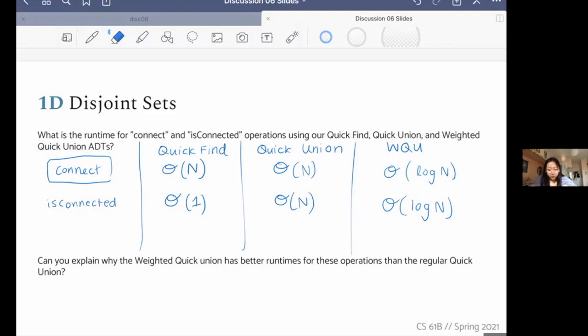So the Weighted Quick Union and the Quick Union, the only difference is that the Weighted Quick Union has shorter heights in its underlying tree. And so because the driving force for the connect and is connected run times is the amount of time it takes to find the parent of our current element or the set representative of our current element, it will only take as long as the tree is tall. And so if the Weighted Quick Union has bushier or shorter trees, the Weighted Quick Union will be faster.